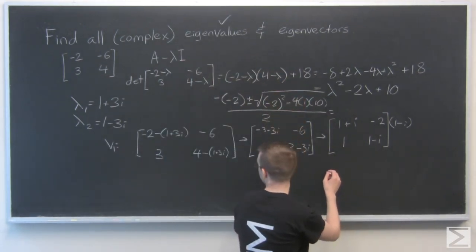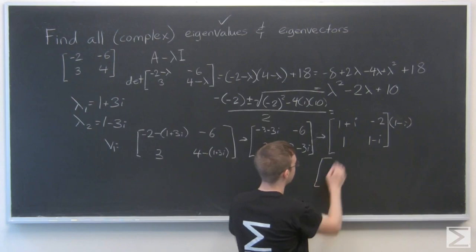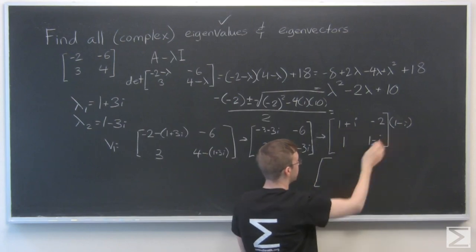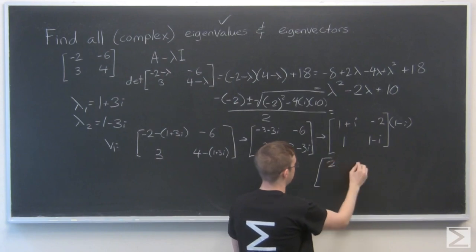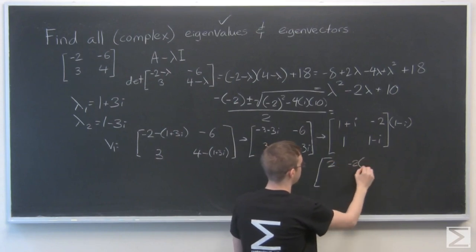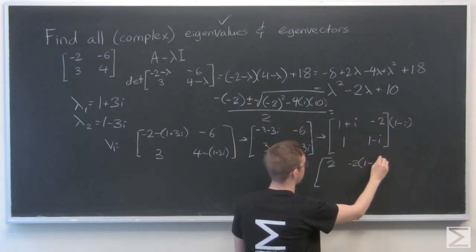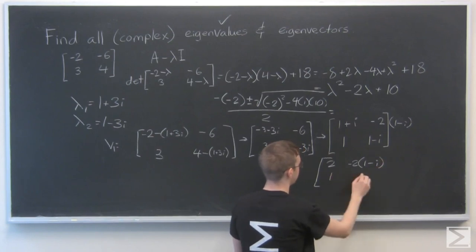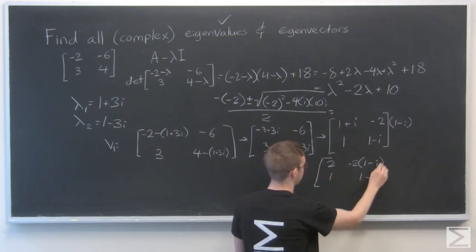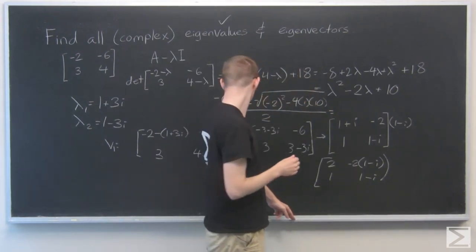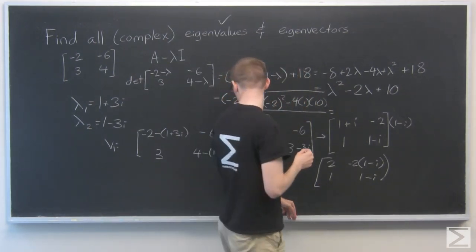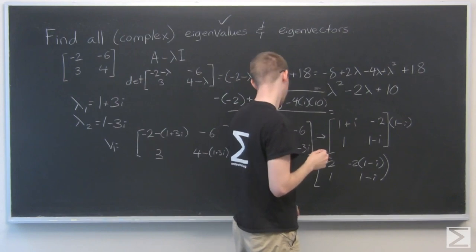So I'm going to bend down to this. 1 plus i times 1 minus i. That's a sum and difference formula, and the result is 2. Here we have minus 2 times 1 minus i. Here's 1, 1 minus i.